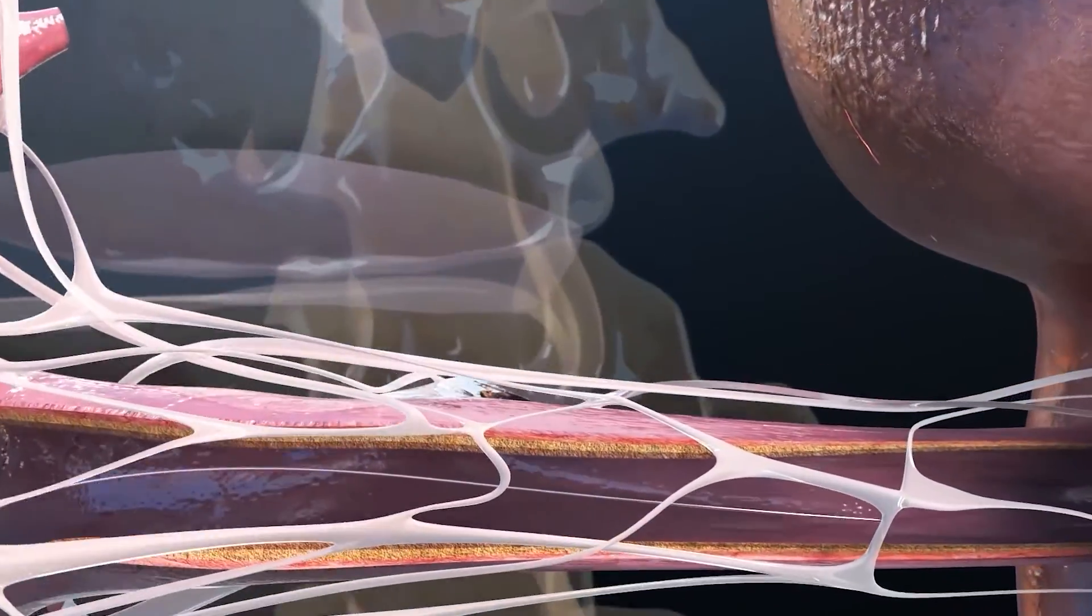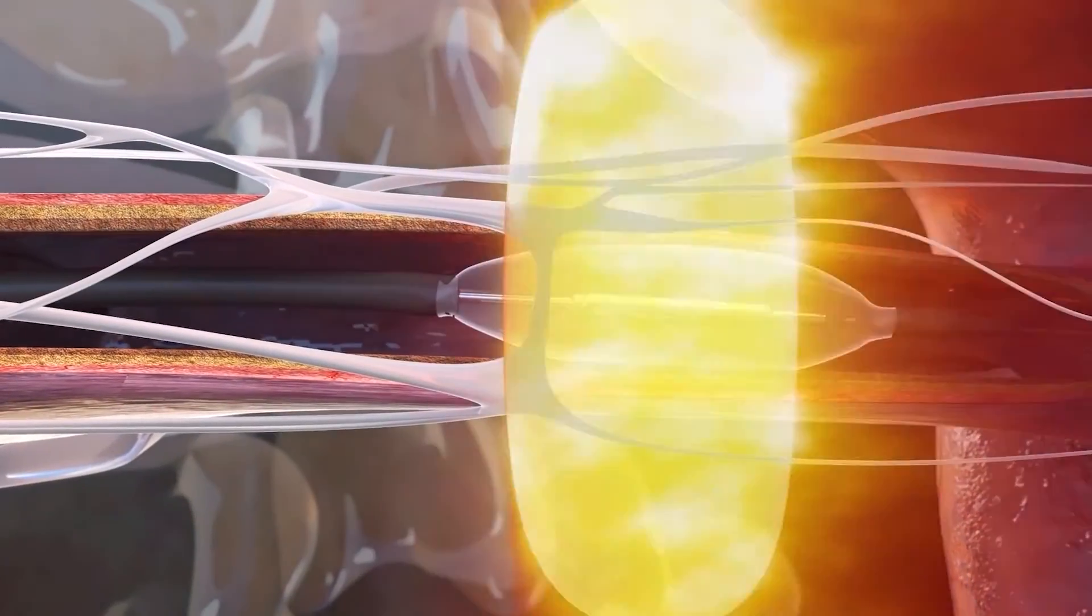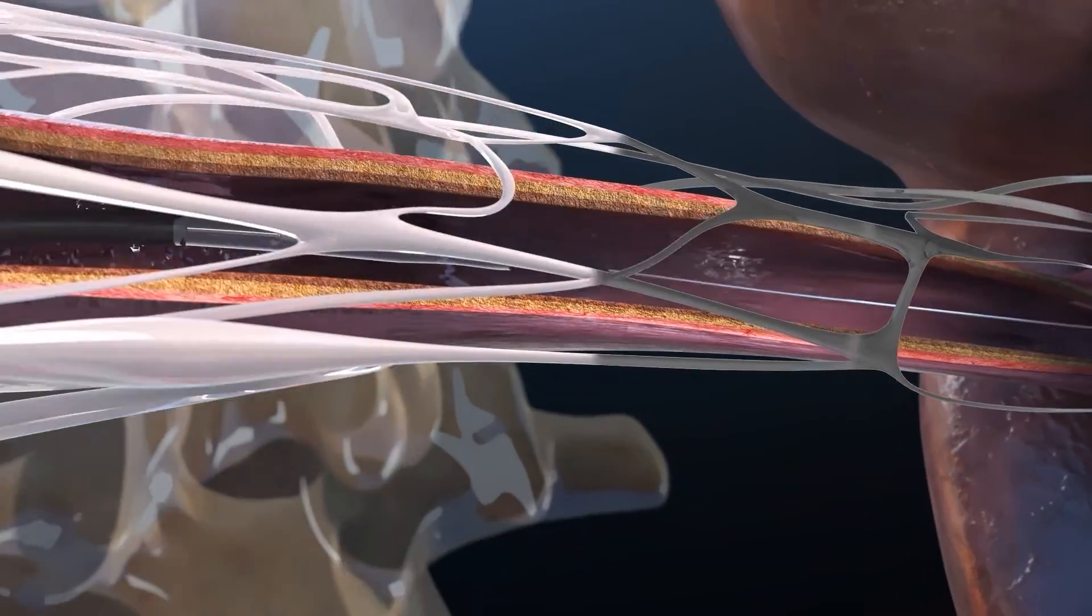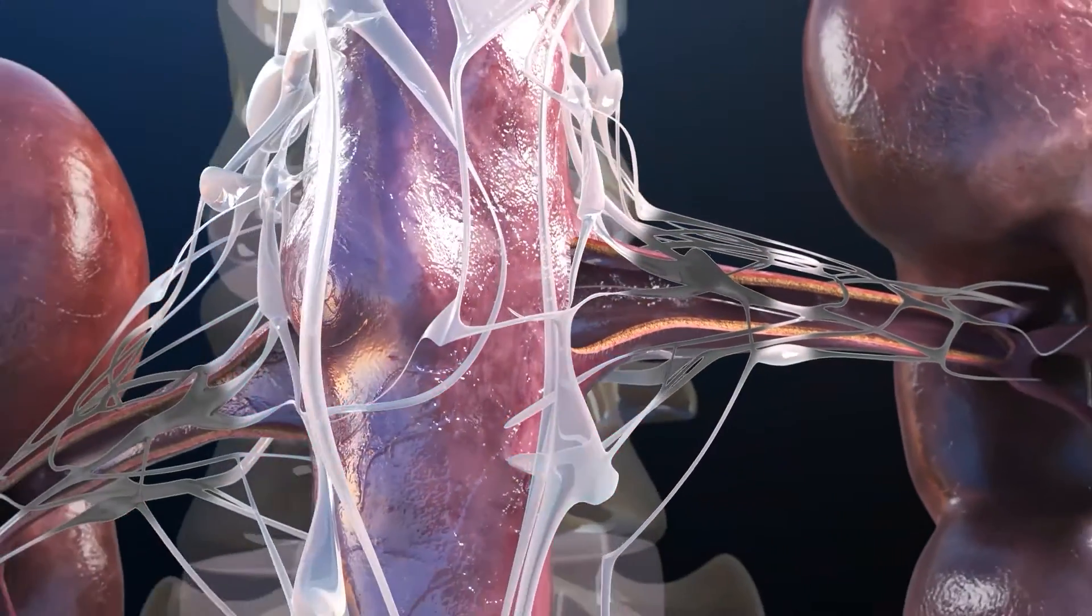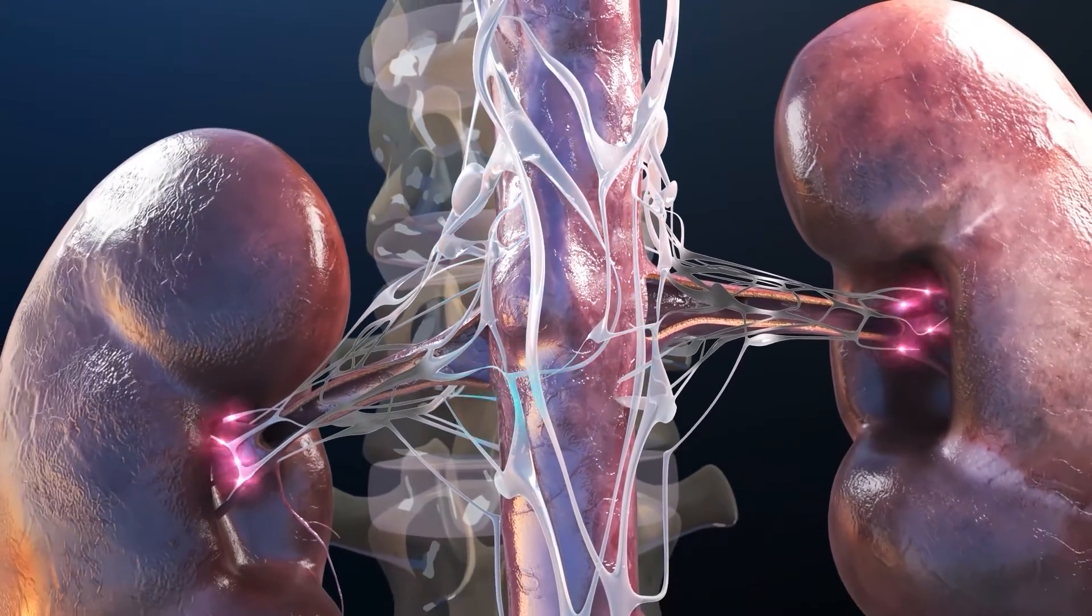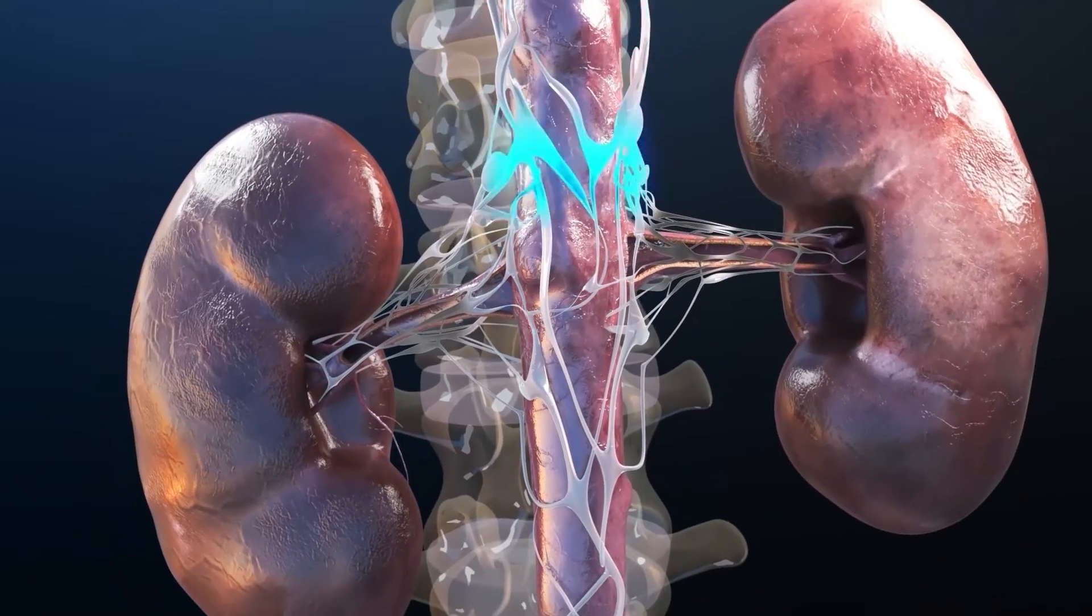The procedure is repeated on the contralateral renal artery to achieve bilateral denervation with another two to three sonications of seven seconds each. The total sonication ablation time across both arteries is less than one minute.